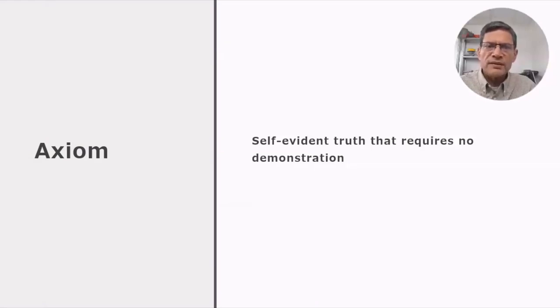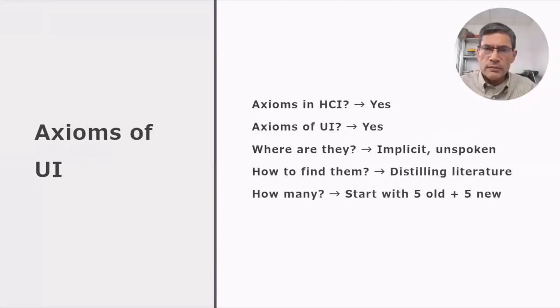An axiom is a self-evident truth that requires no demonstration. Axioms are used in mathematics, physics, logic and several other fields. Human-computer interaction is no exception. Regarding axioms and human-computer interaction, we can ask these questions.